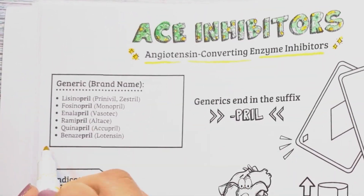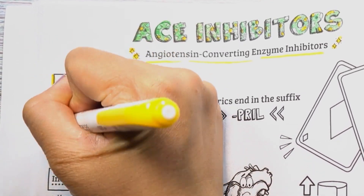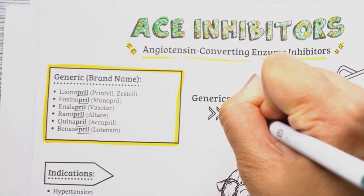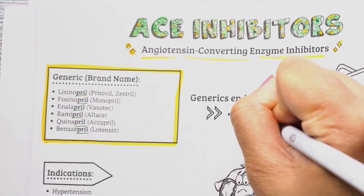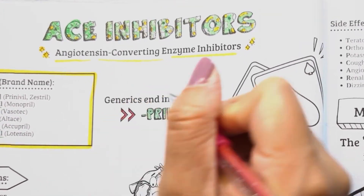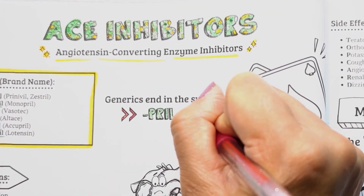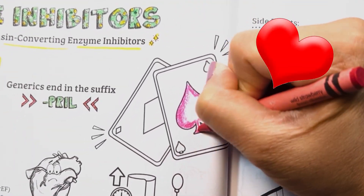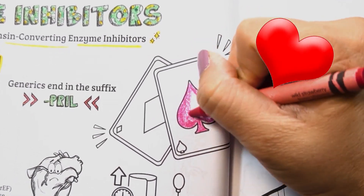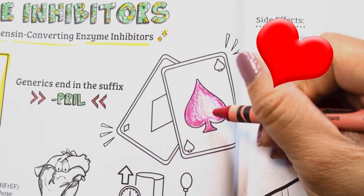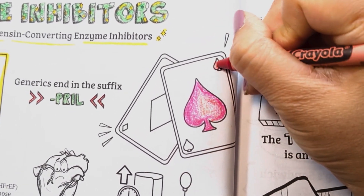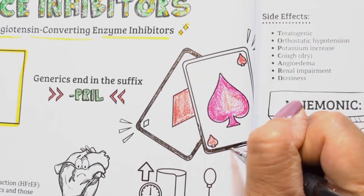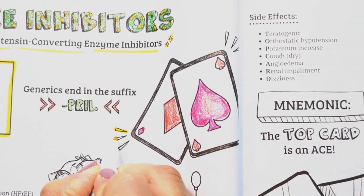The drugs in this class are easy to recognize as they all end in the suffix -pril, such as lisinopril, enalapril, ramipril, and benazepril, just to name a few. This is the most common class of cardiology medications used, so therefore more than likely it will show up on your exams. Our visual anchor for this class is an ace card.